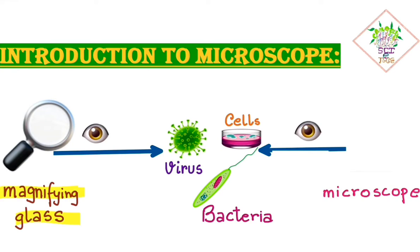Until the discovery of the microscope, this magnifying glass was the only known instrument used to make a minute object look bigger. But this magnifying glass was not sufficient to visualize an object which is only a micrometer long.